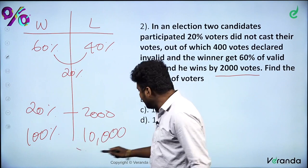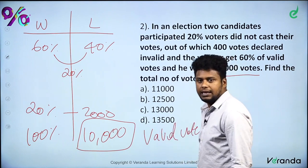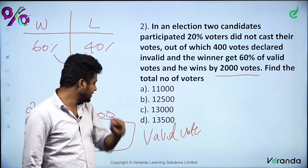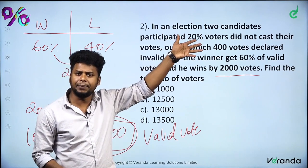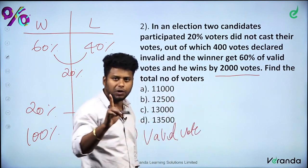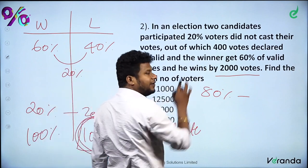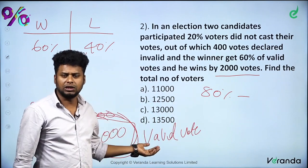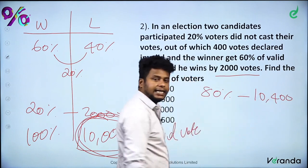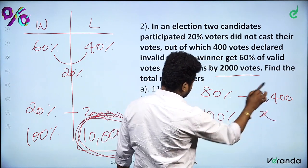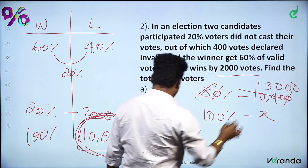The total valid vote is 10,000. Now, 400 votes are invalid, so total votes cast = valid + invalid = 10,000 + 400 = 10,400. Since 80% of registered voters cast their votes, 80% = 10,400. Therefore, 100% = 10,400 × 10/8 = 13,000. The total number of voters is 13,000.